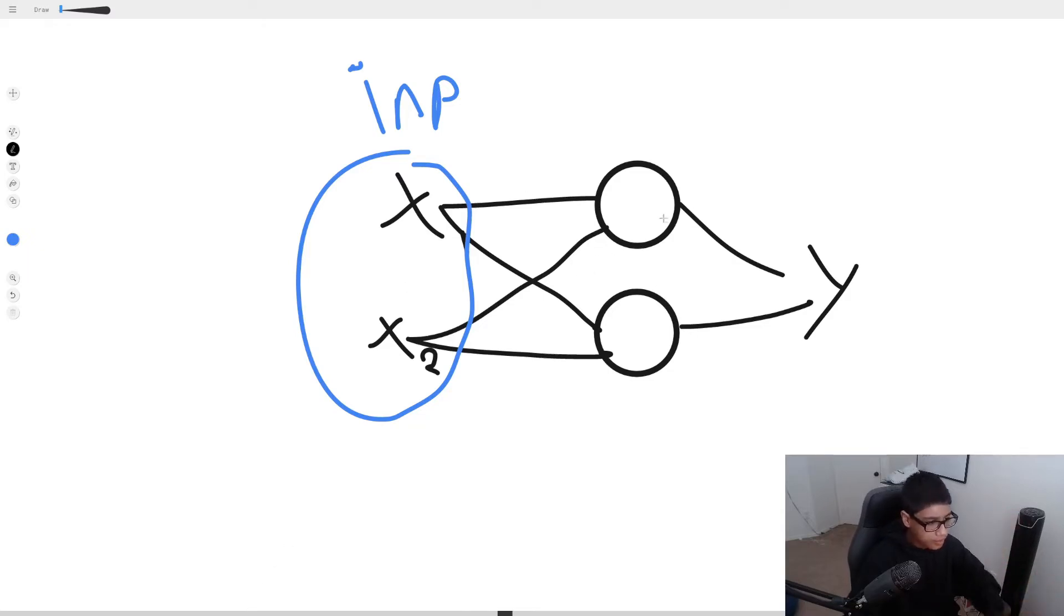Then next, what I represented as circles, they are hidden layers. So a neural network consists of an input layer, a hidden layer, or hidden layers, and then an output layer.